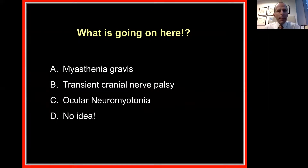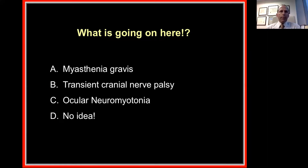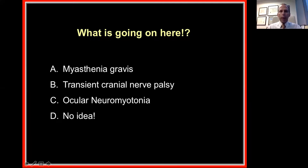The question is: what is going on? Is this myasthenia gravis, a transient cranial nerve palsy, ocular neuromyotonia, or something unknown? The majority — 42% — correctly identified this as ocular neuromyotonia.